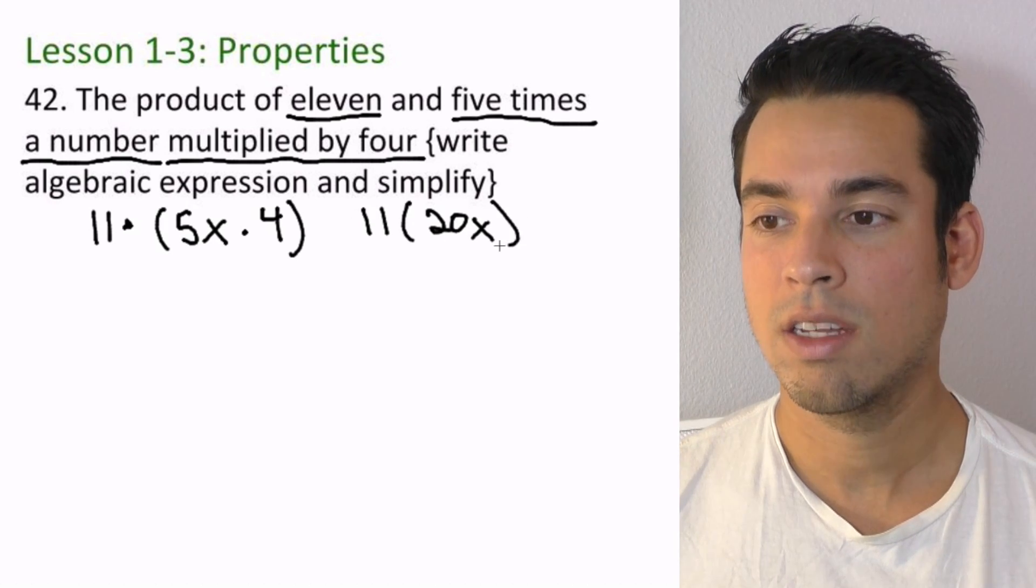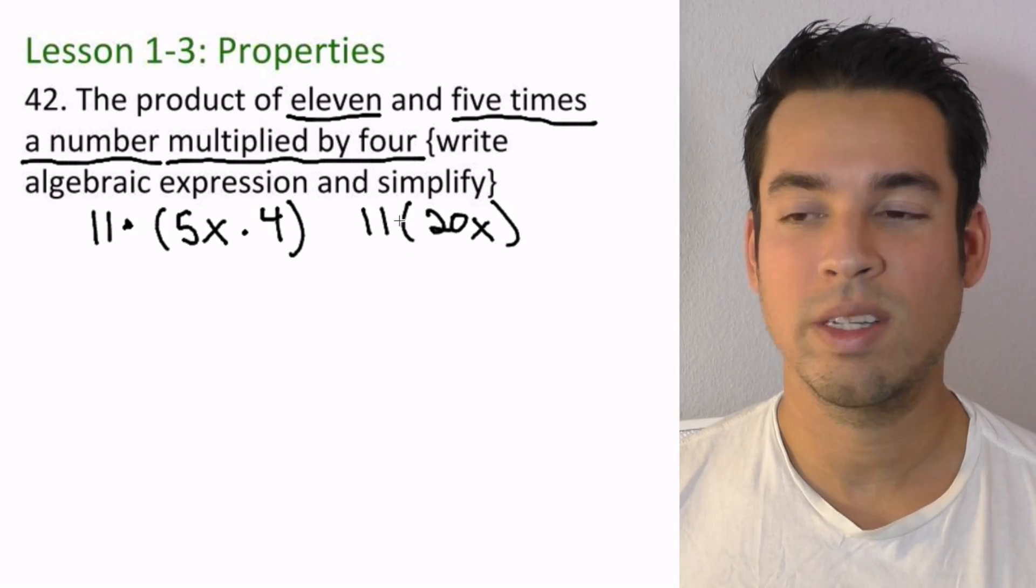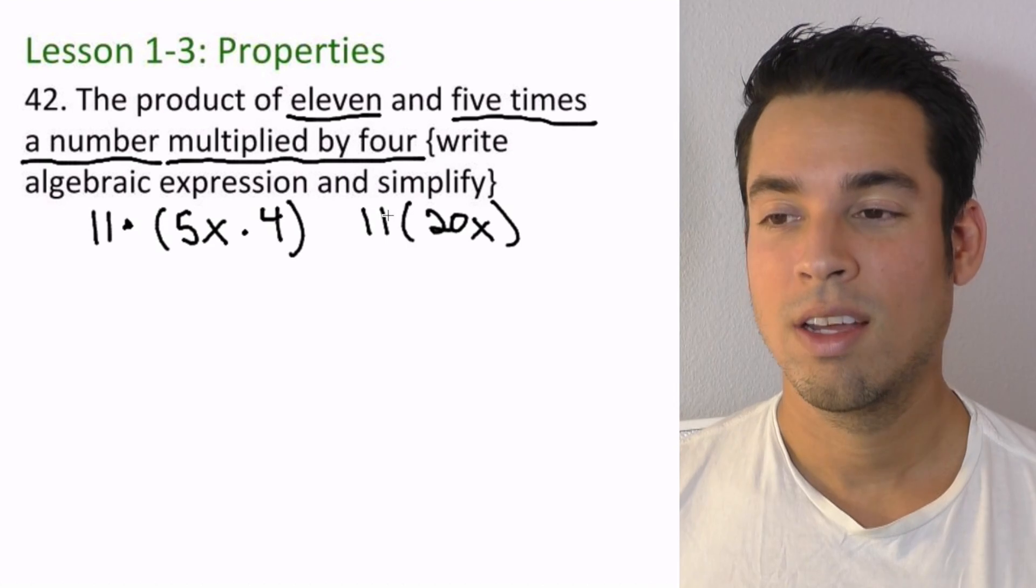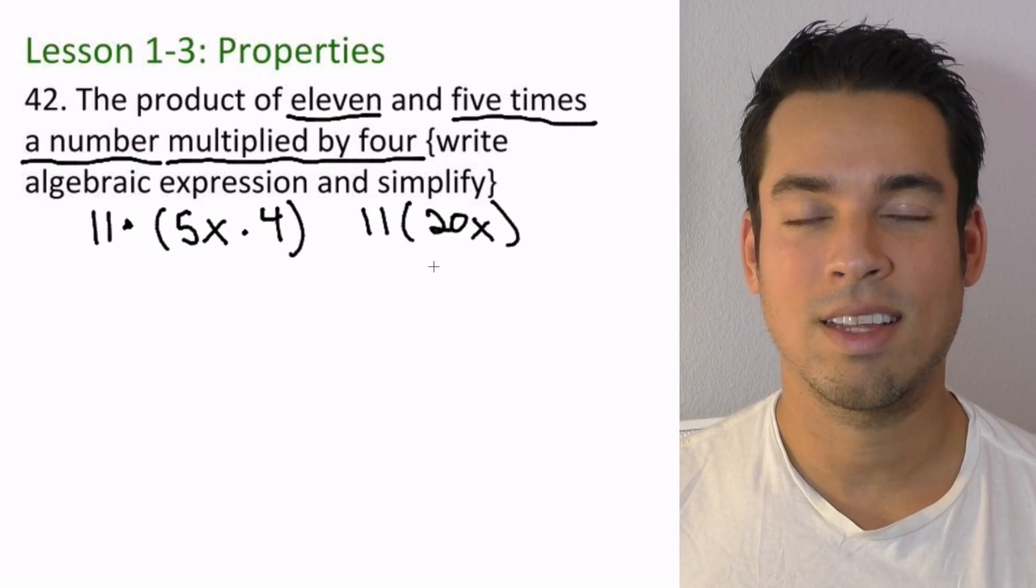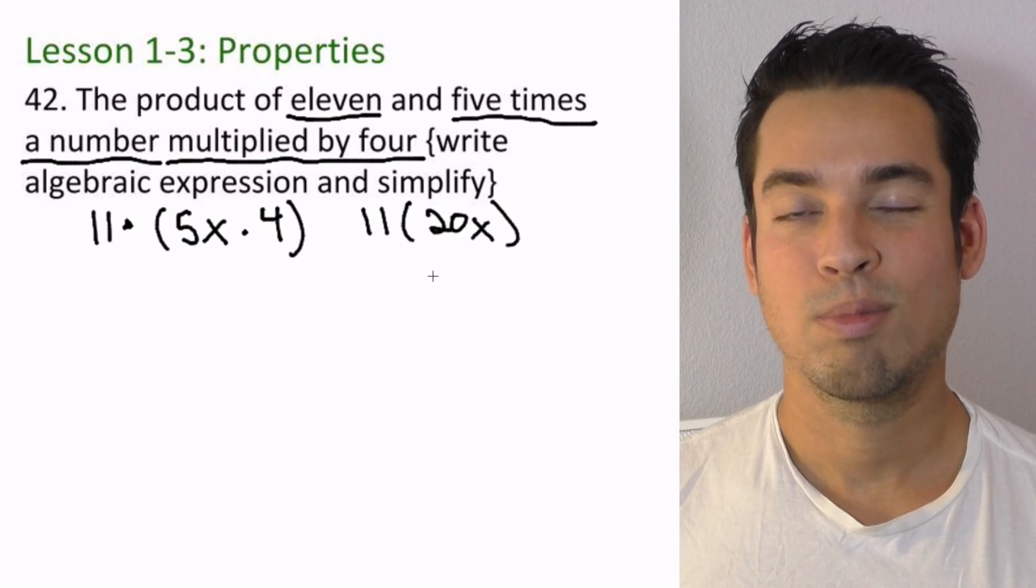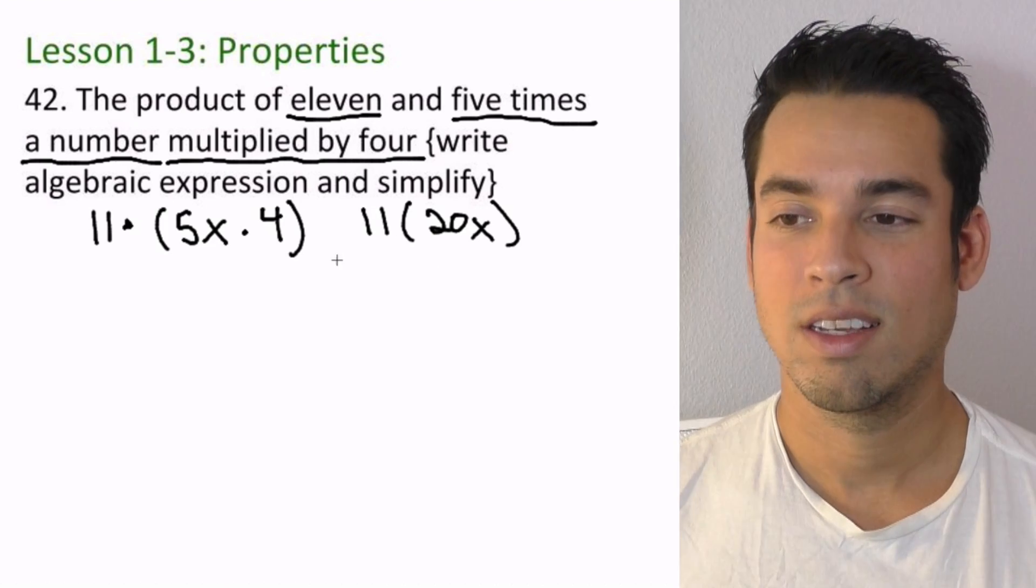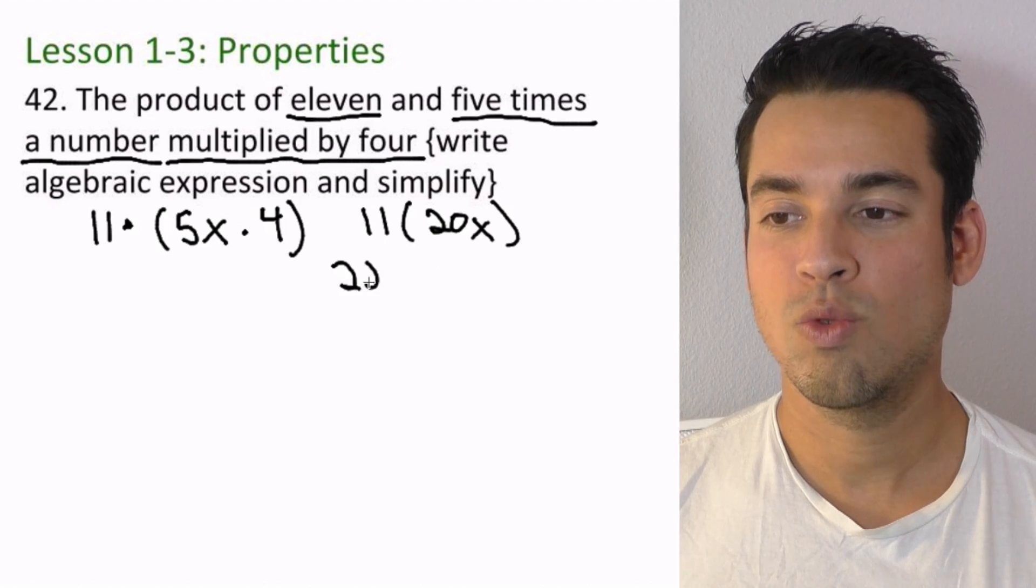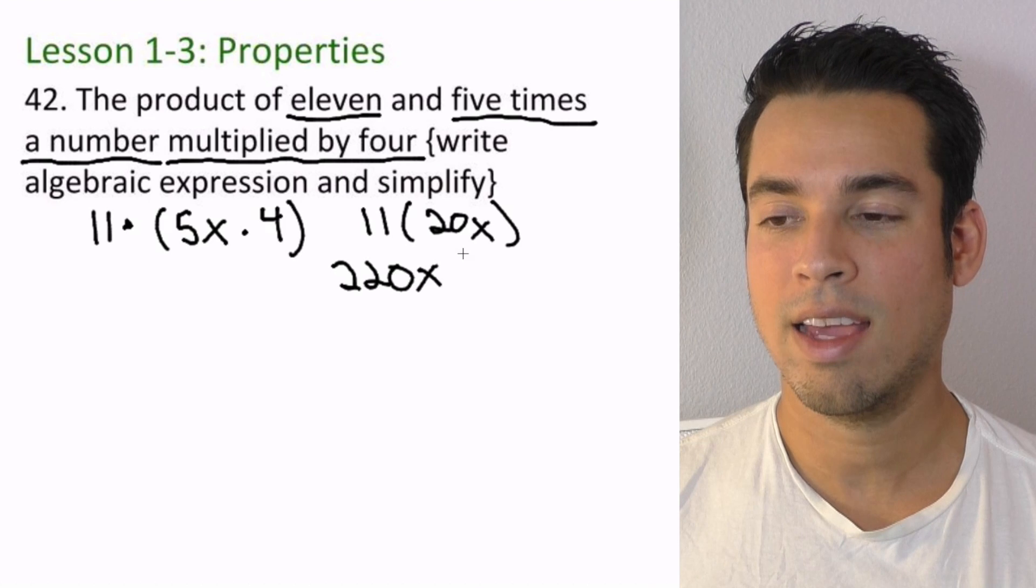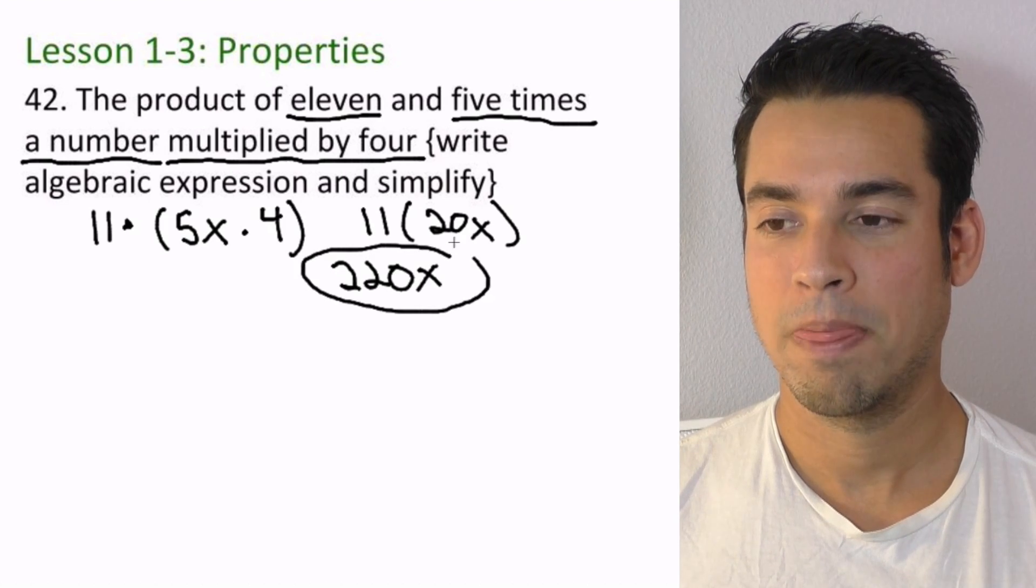What's 11 times 20? You can write it out if you want. I like to do it like this: I like to say 10 times 20 is 200, plus 1 times 20, which is 20. So we end up with 220x. And done.